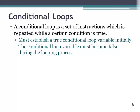A conditional loop is a set of instructions which is repeated while a certain condition is true. In order to use a conditional loop, you must establish a conditional loop variable that's initially true. The conditional loop variable must become false during the looping process.